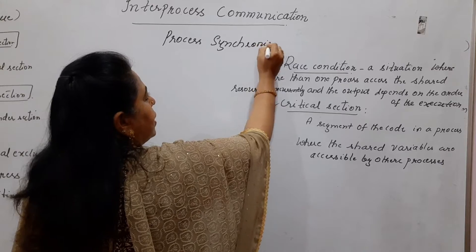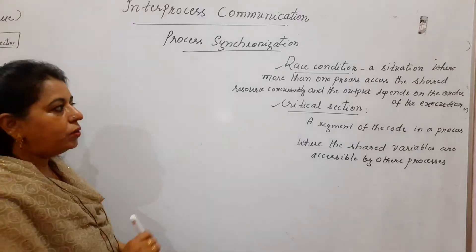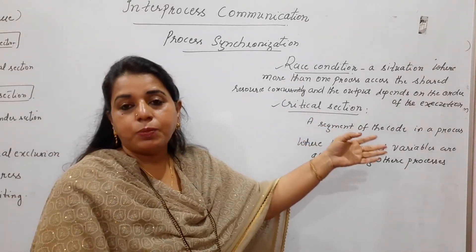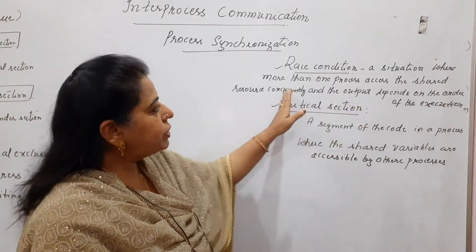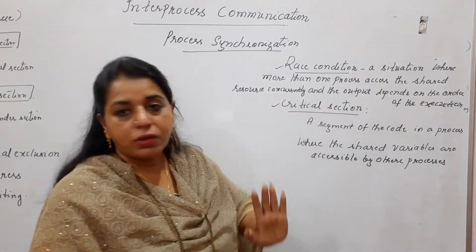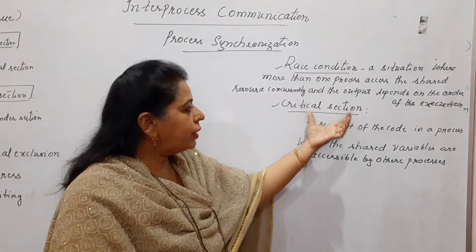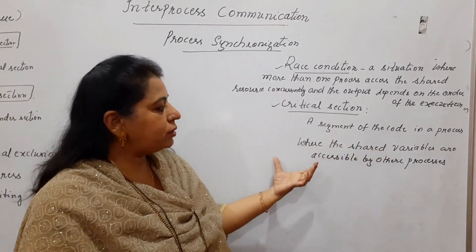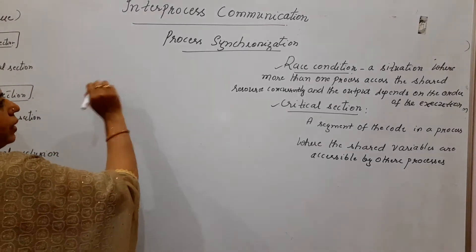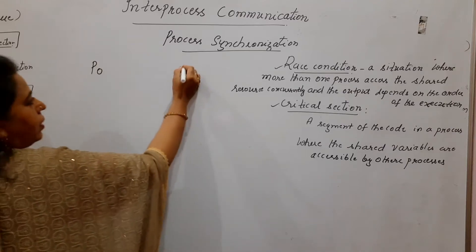If the processes are not synchronized, they will give you the wrong result. If I just read out the race condition definition at this point, you may not understand: a situation where more than one process accesses the shared resource concurrently and the output depends on the order of execution. An example will make it clearer. Critical section is a segment of code in a process where the shared variables are accessible by other processes also. To understand the race condition problem, let us take two processes, P0 and P1.